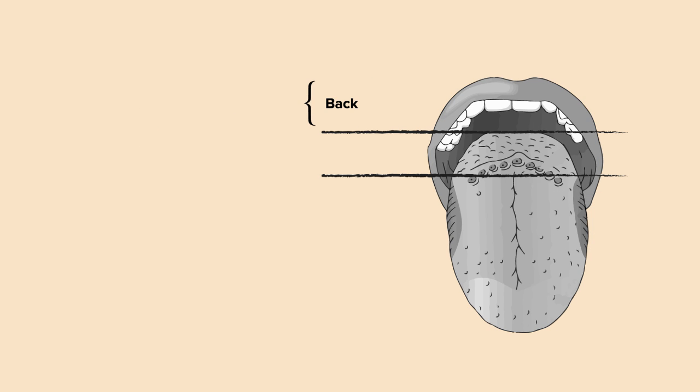Starting at the back of the tongue, think of this region as the area of the vallecula, epiglottis, and pharynx. Even though the pharynx is a little more posterior and inferior, it helps us remember that the X in pharynx reminds us of cranial nerve 10, the vagus nerve.